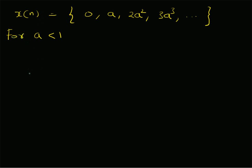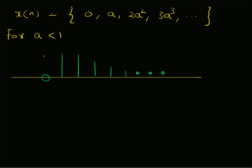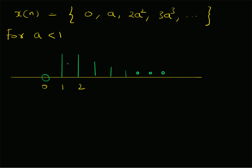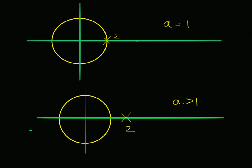For values of a less than 1, the signal is a decaying function. For example, if a = 1/2, then at n = 1 the value is 1/2, and at n = 2 the value is 2 · (1/2)² = 1/2 as well, and then the values slowly decay. Therefore, for two poles at z = a with a < 1 (inside the unit circle), the corresponding time domain signal decays over time.